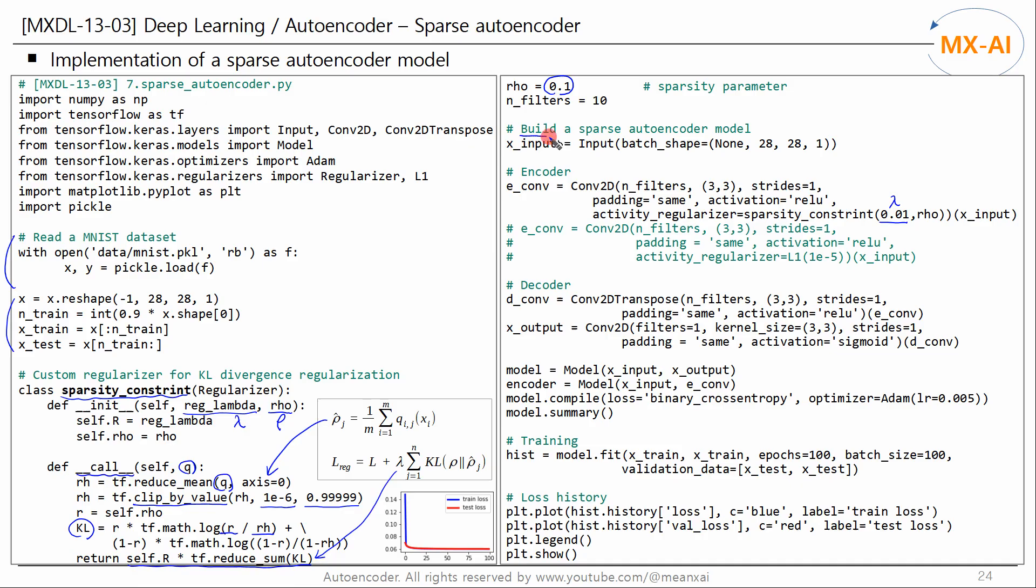Next, we build a sparse autoencoder model, create an input layer, and create an encoder layer using a 2D convolutional layer. Apply the sparsity constraint class we just created to the activity regularizer argument. Alternatively, L1 activity regularization can be applied like this.